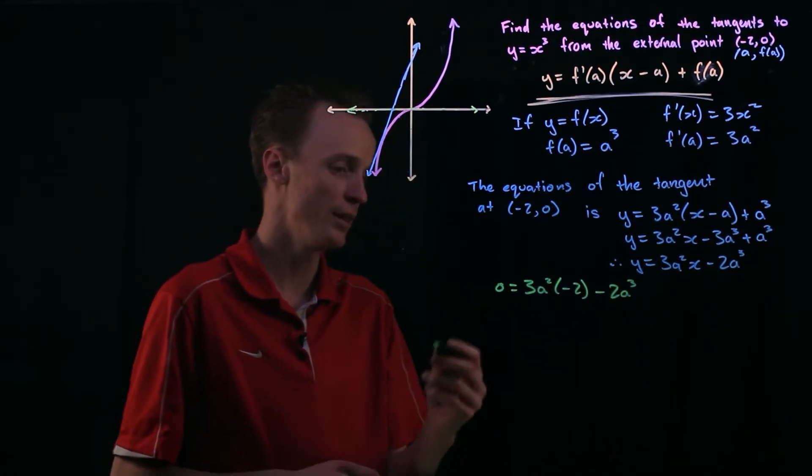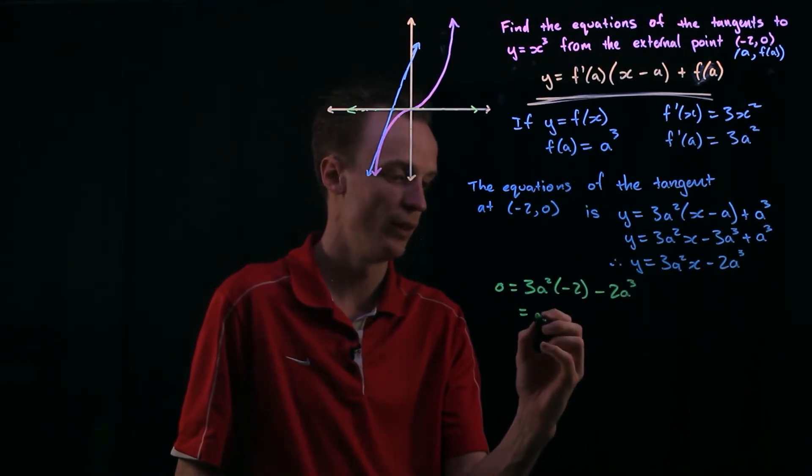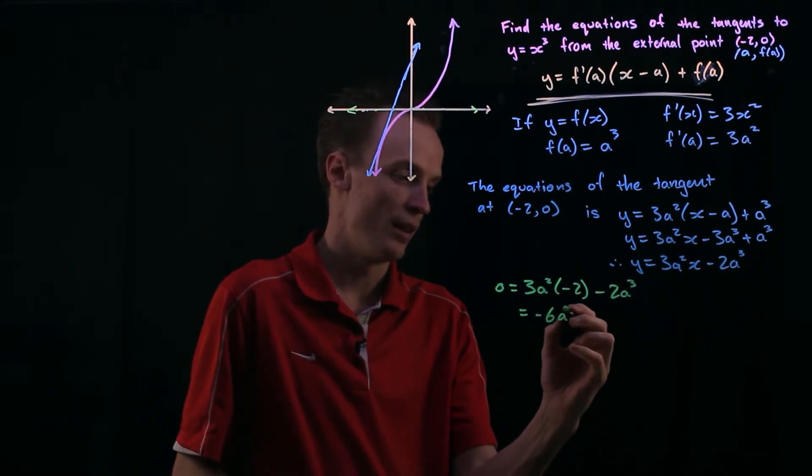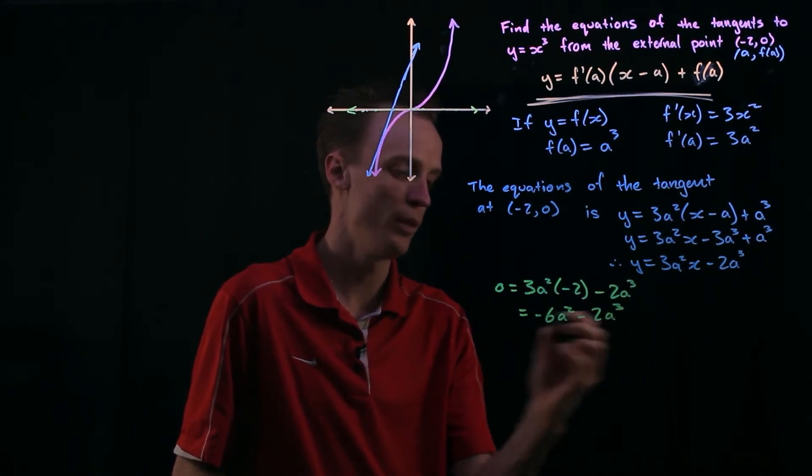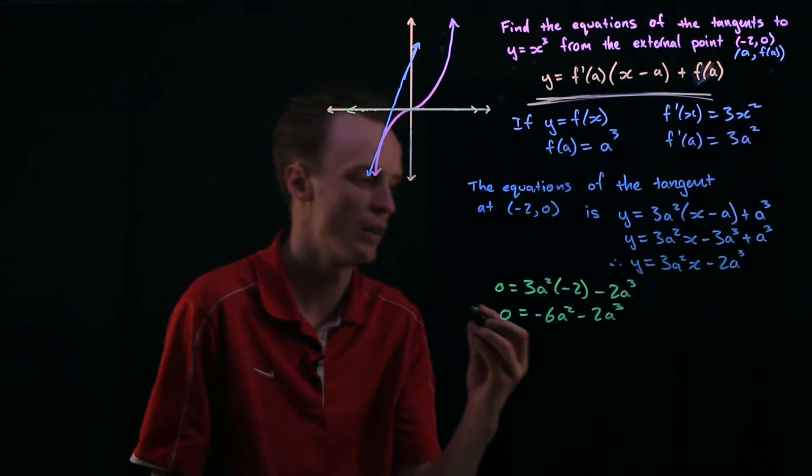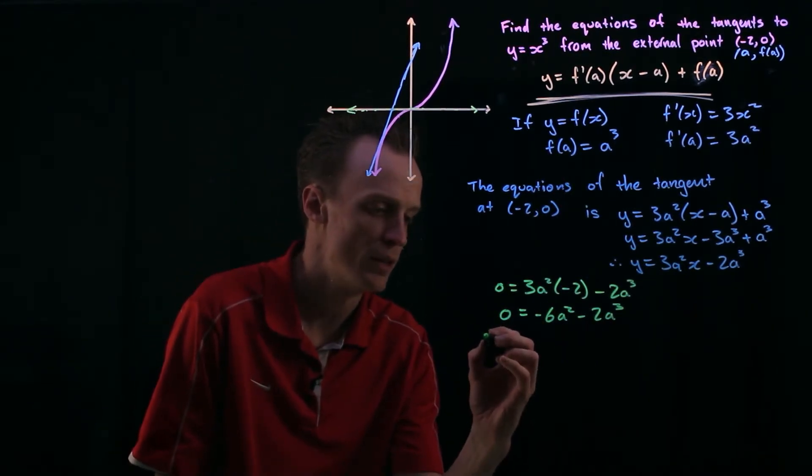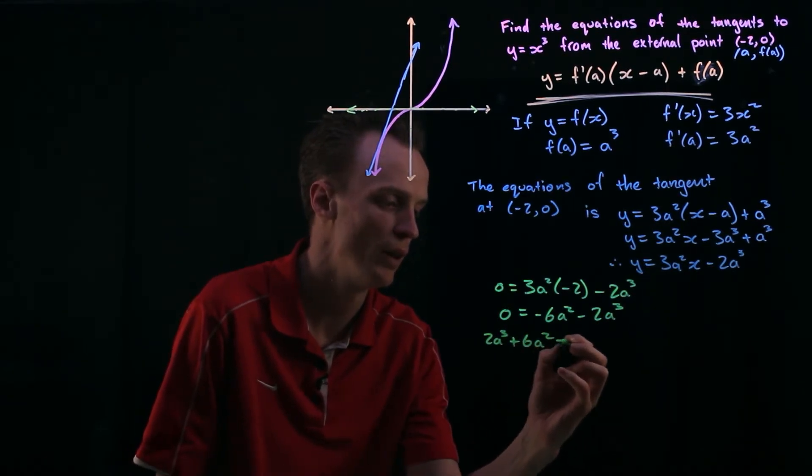Now looking at this I can expand it out. So this will be negative 6a squared take 2a cubed is equal to 0. And what I'm going to do here is I'm just going to move it to the other side to make it easier to work with. So this will be 2a cubed plus 6a squared equals 0.